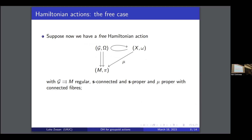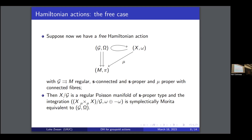Now let's go to actual Hamiltonian actions. Suppose we start with a free action, because in that case the situation is very nice and follows pretty directly from the PMCT setting. I'm going to assume the groupoid that is acting to be regular, source-connected, and source-proper. In this setting things are very nice because the quotient is smooth — since the action is free — and it is actually a regular Poisson manifold of source-proper type.